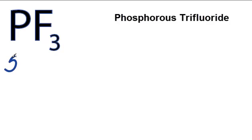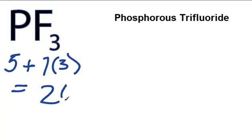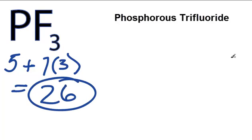On the periodic table, phosphorus has 5 valence electrons, plus fluorine. We have 7, but we have 3 fluorines. So 5 plus 21 is 26 total valence electrons.